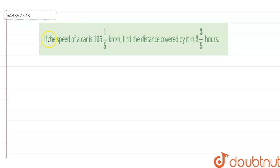In this problem, it is given that if the speed of the car is 105 whole 1 by 5 kilometers per hour, find the distance covered by it in 3 whole 3 by 5 hours. So we are given...